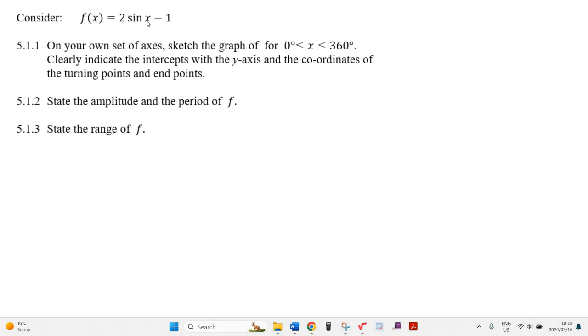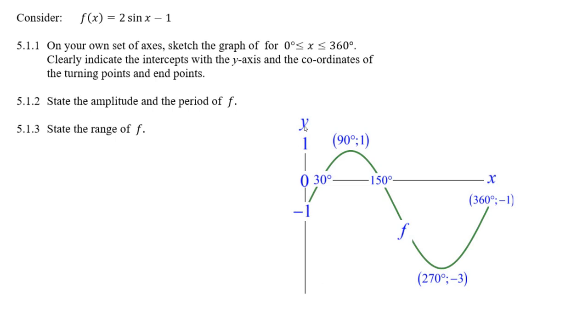If I let x equal 0 there, the sine of 0 is 0. That means 0 and minus 1 is a place where it goes through the y-axis. It's the y-intercept.